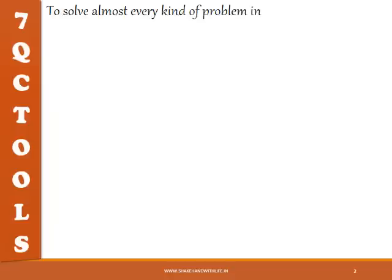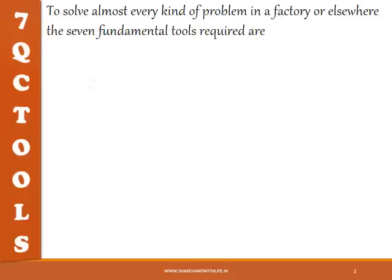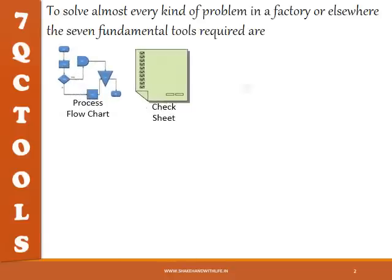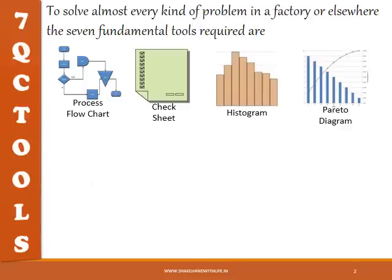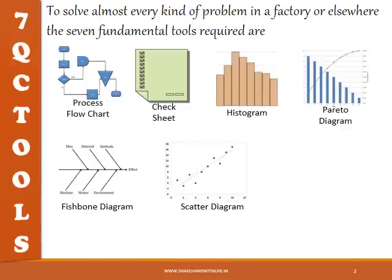To solve almost every kind of problem in a factory or elsewhere, the seven fundamental tools required are: process flowchart, check sheet, histogram, Pareto diagram, fishbone diagram, scatter diagram, and control charts.